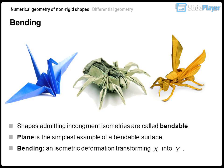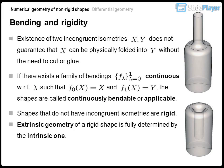Shapes admitting incongruent isometries are called bendable. The plane is the simplest example of a bendable surface. Bending is an isometric deformation transforming one shape into another. However, existence of two incongruent isometries does not guarantee that one can be physically folded into the other without cutting or gluing. If there exists a continuous family of bendings, the shapes are called continuously bendable or applicable. Shapes that do not have incongruent isometries are rigid.